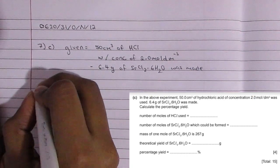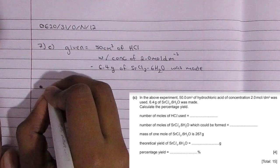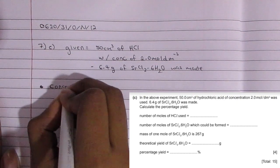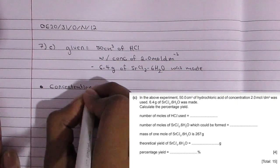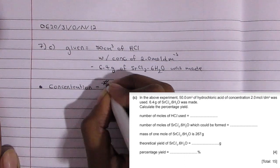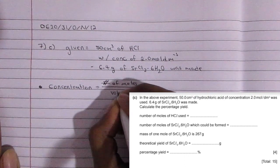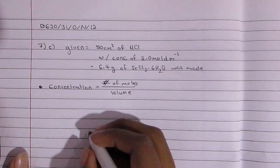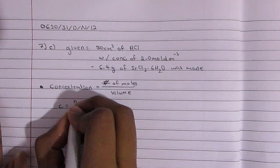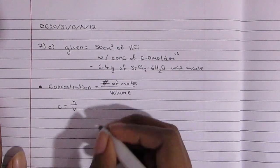So the number of moles of HCl used, we're going to use this simple formula which is concentration is equal to the number of moles over volume, or you can just remember as C equals N over V. And then from there you're going to rearrange the formula so the number of moles would be C times V.